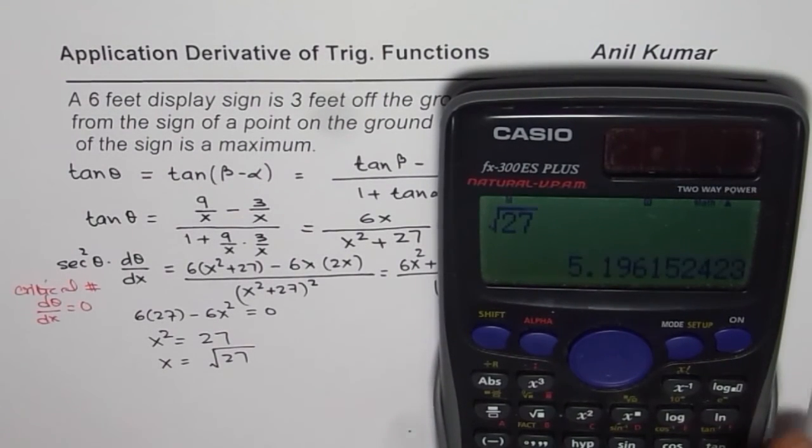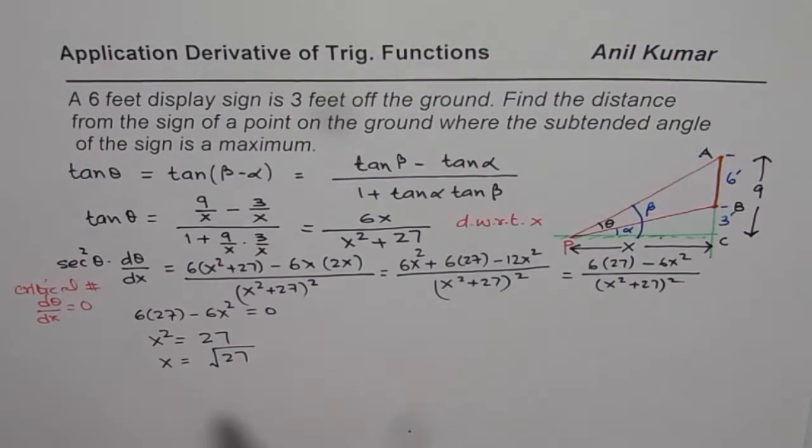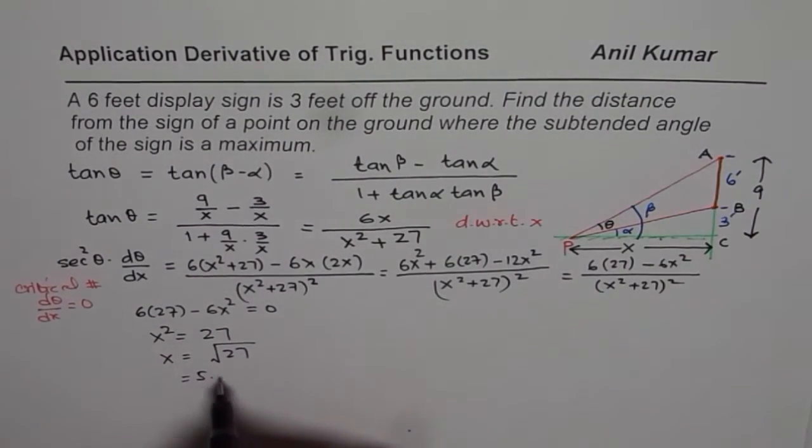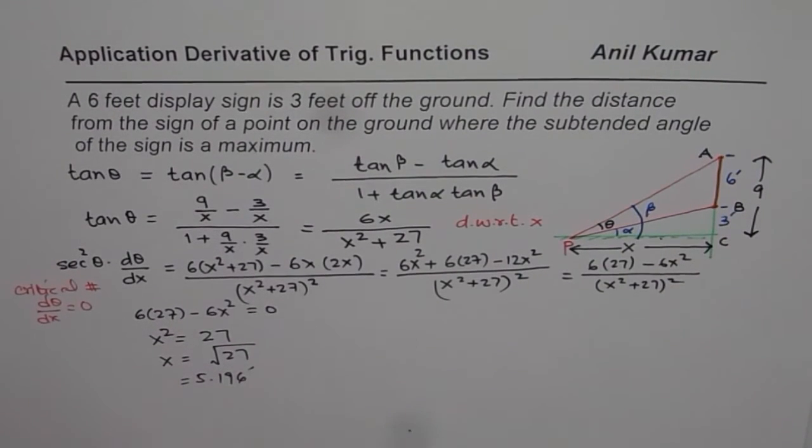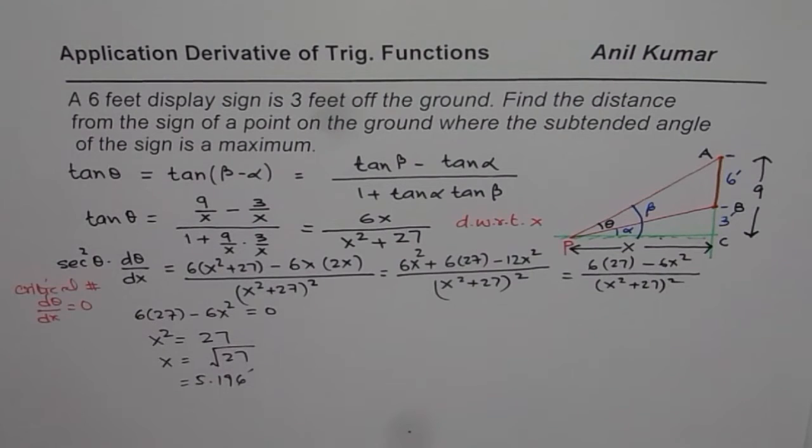Yes, 3 square root 3, 5.196, which is equal to 5.196, okay? Units will be in feet, right? So that is the unit. Now the idea is to also show that this is indeed a maximum.